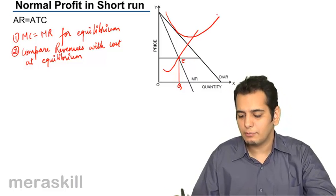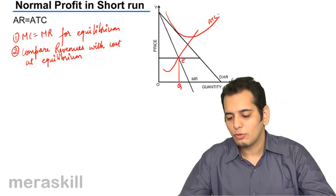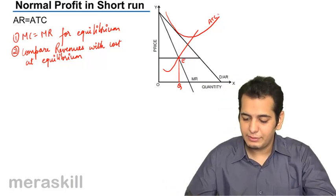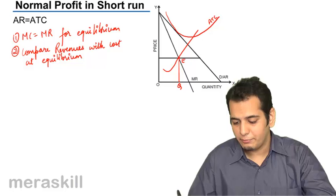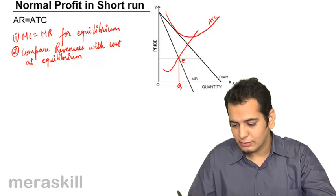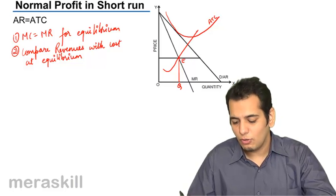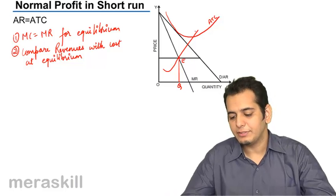This is my average total cost curve. You can see that this curve is U-shaped and MC curve is cutting the average total cost where ATC is minimum.